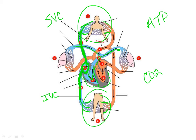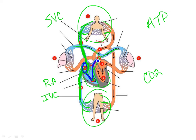Deoxygenated blood comes into the right atrium and flows through a valve called the tricuspid valve, which allows blood to flow into the right ventricle. When the ventricle fills, it contracts and pushes blood through the pulmonary valve, and that blood goes out through the pulmonary trunk. We'll use blue here since we're talking about deoxygenated blood — through the pulmonary valve into the pulmonary trunk, which splits into the left and right pulmonary arteries.